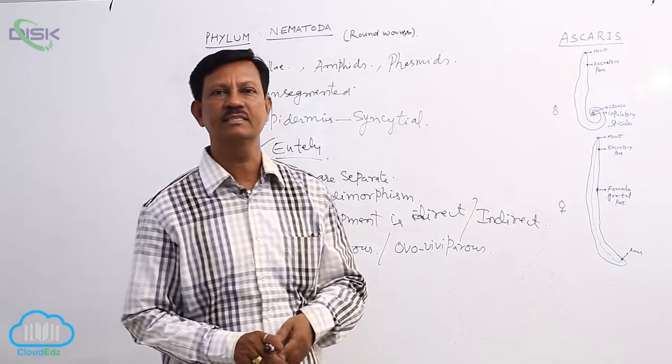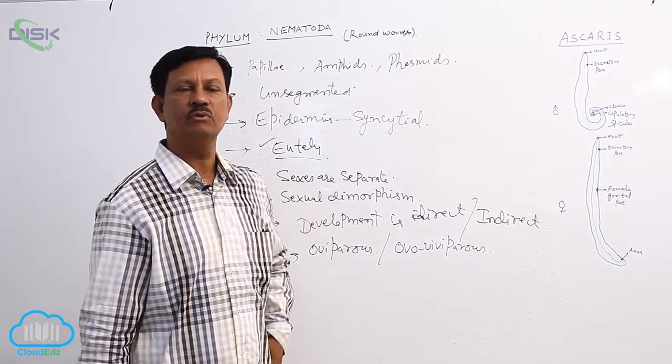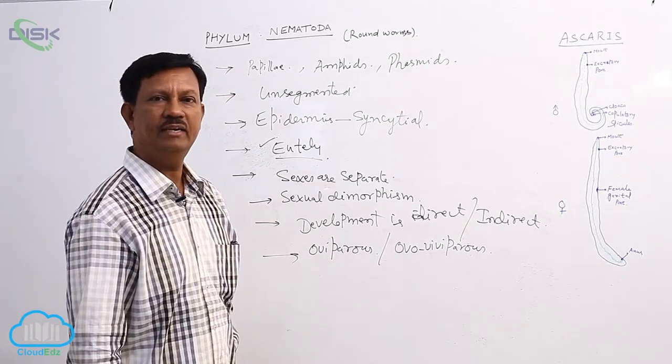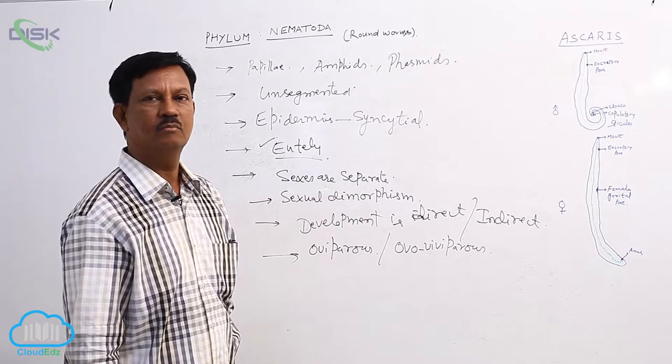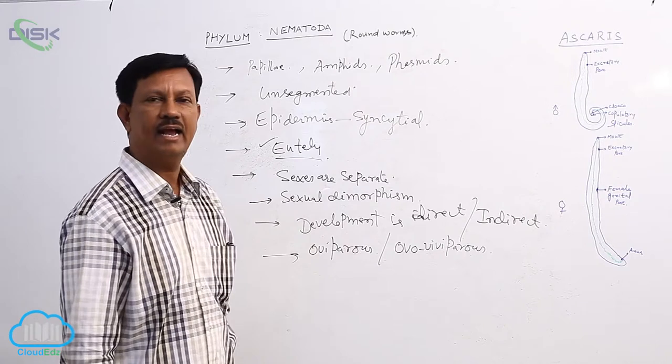They are nematodes, commonly known as the roundworms. They are free-living or terrestrial, mostly parasitic animals. Some are free-living animals.